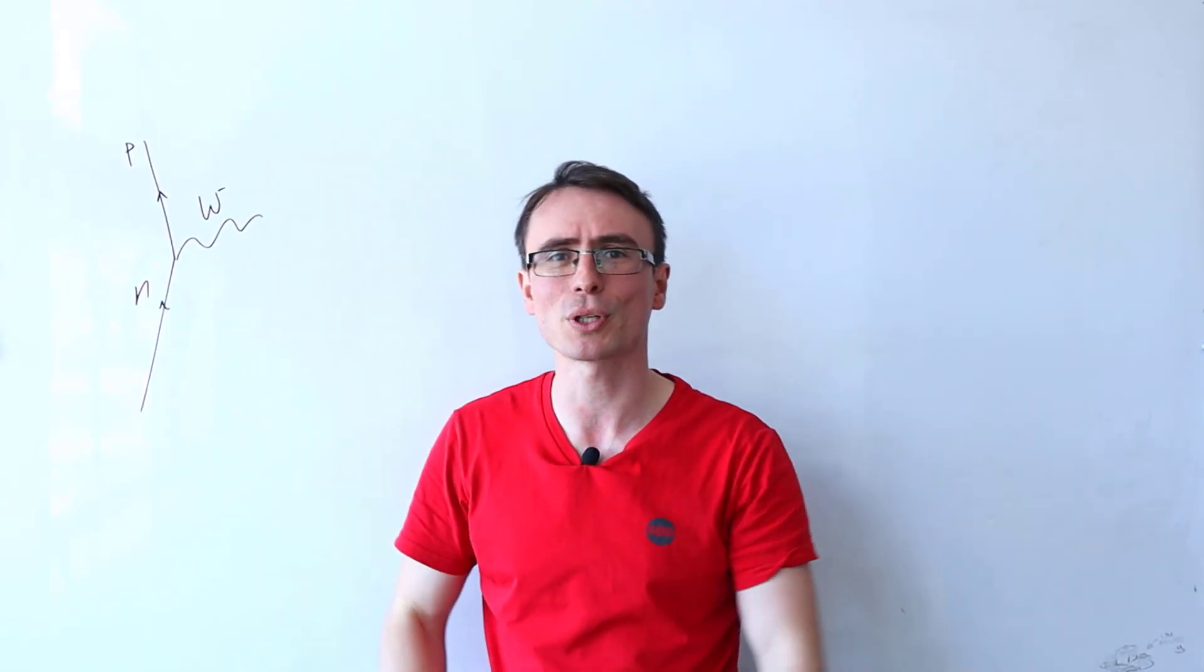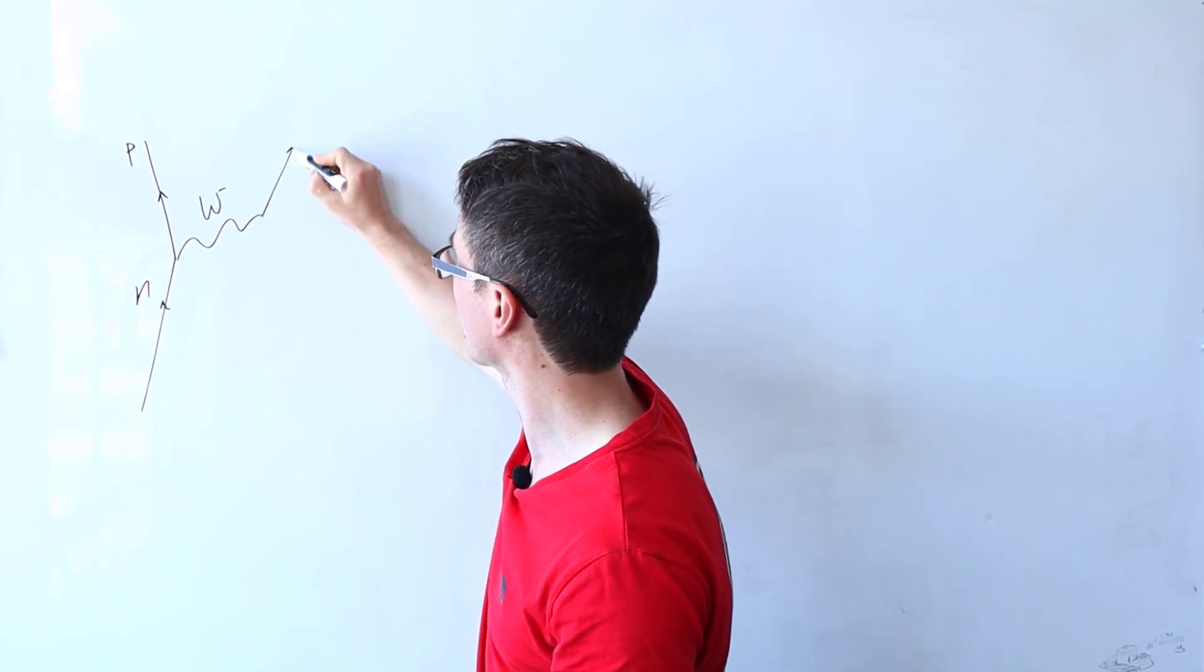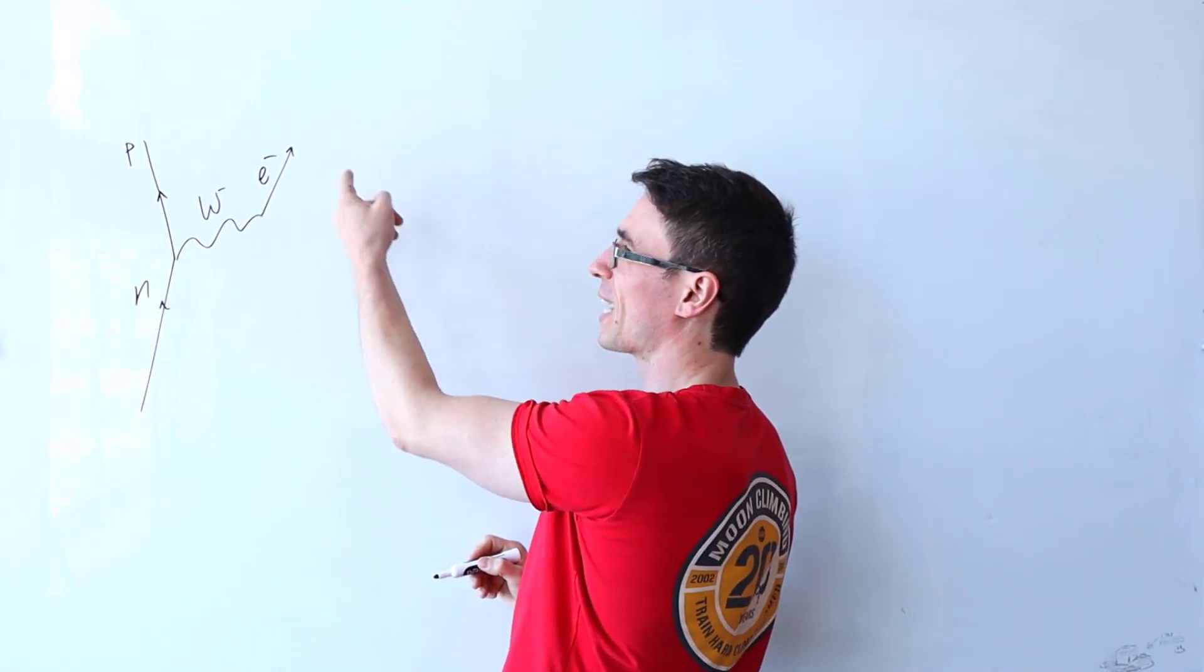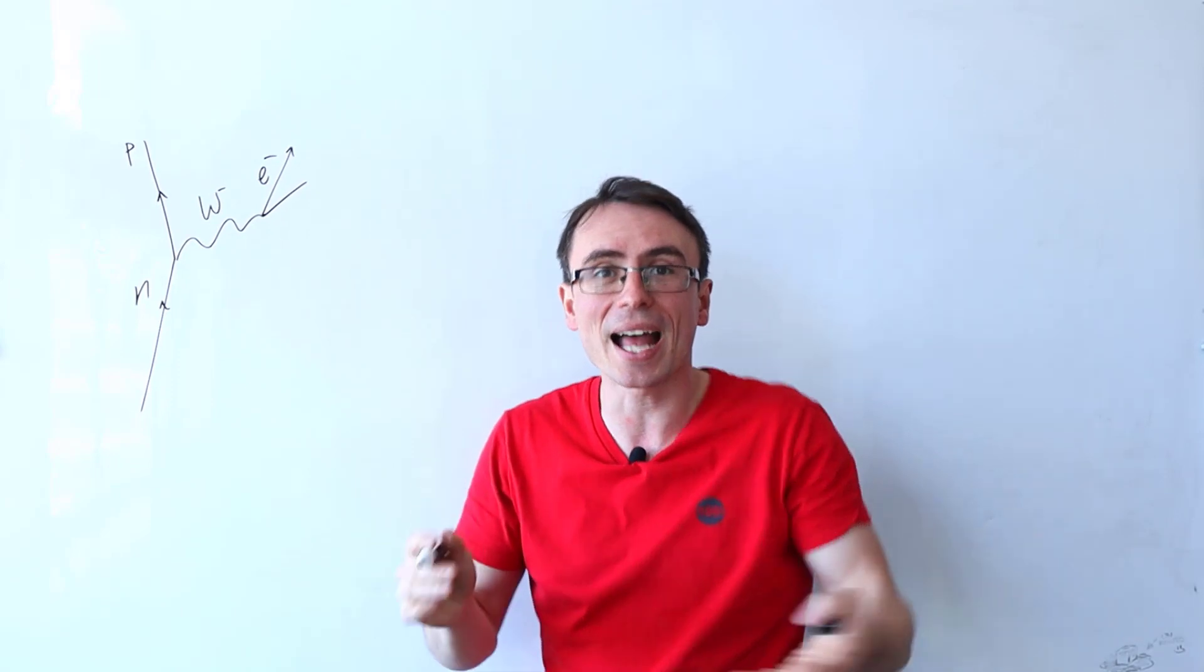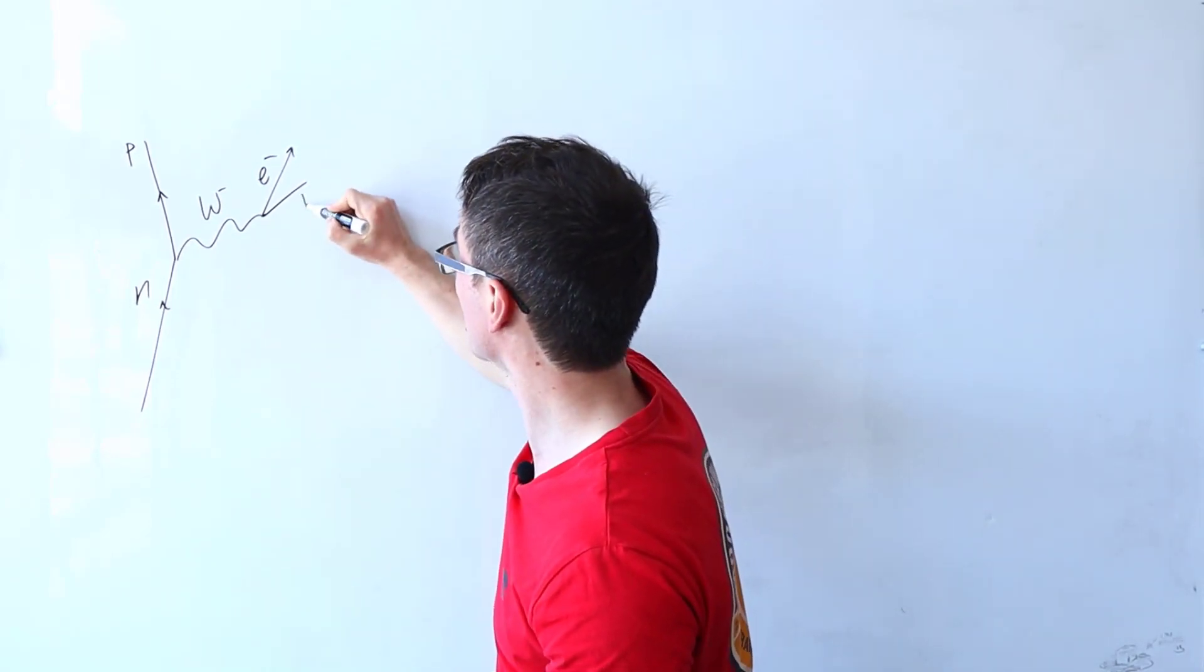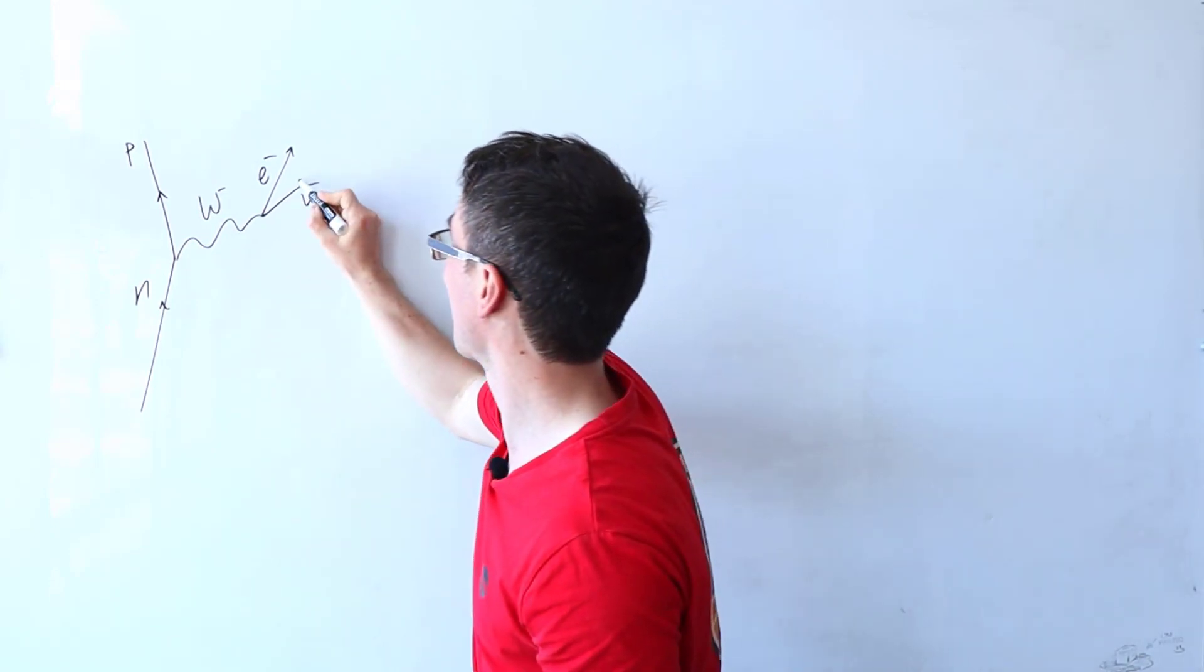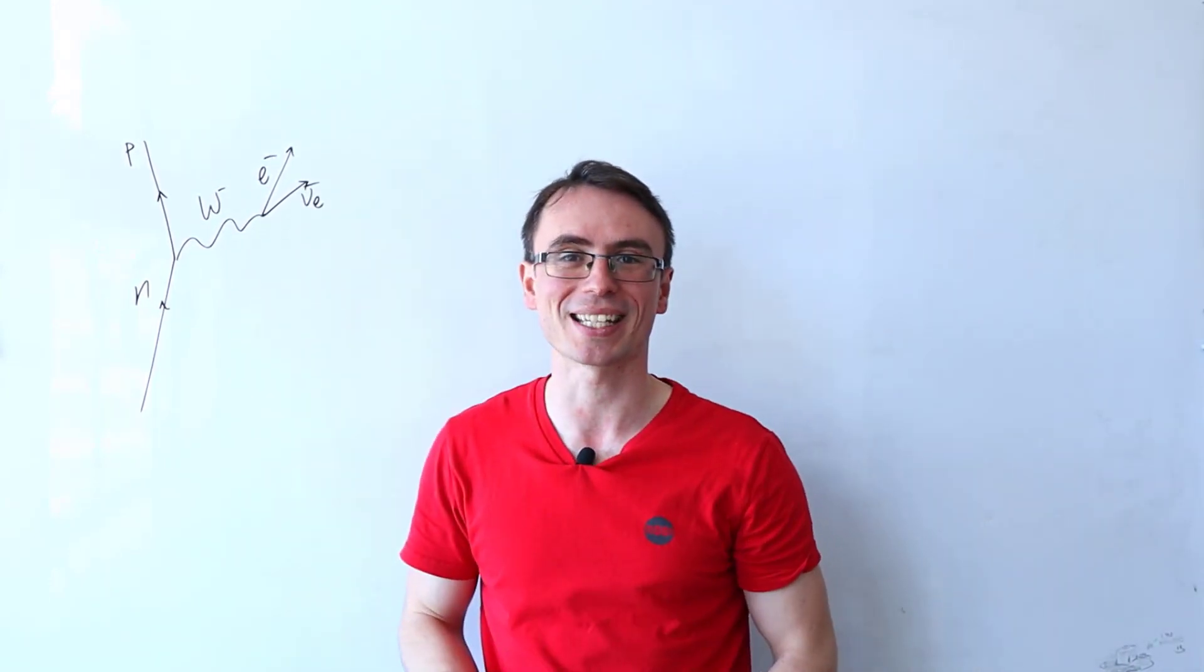Once again, this is a pretty short lived particle and this will decay into further two particles. One of them is going to be the electron. And if I have a normal particle here, that means that I need to get an anti-particle as well, which is the anti-electron neutrino, which will be going this way. And this here is beta minus decay.